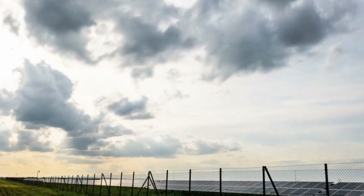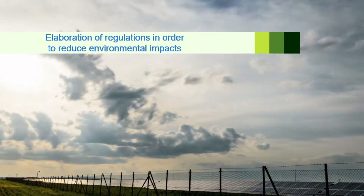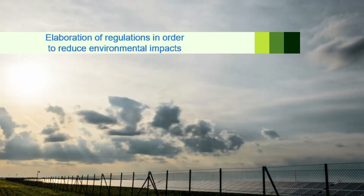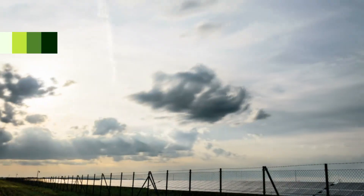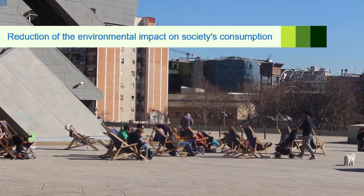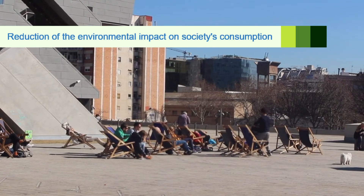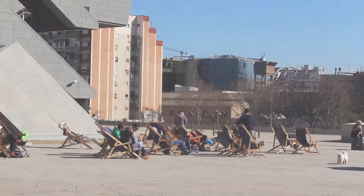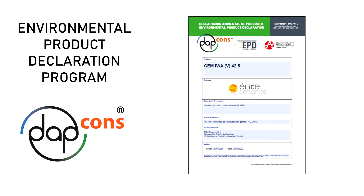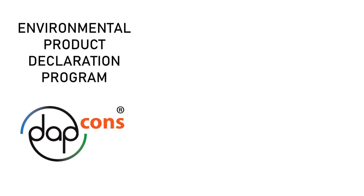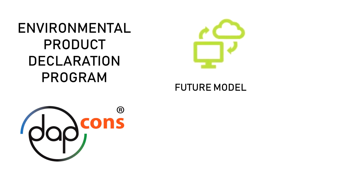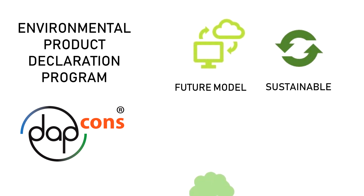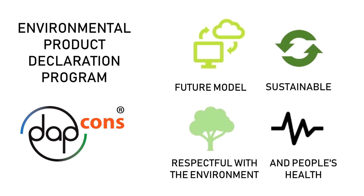On one hand, administrations are increasingly pursuing the reduction of impacts, with the development of regulations, and on the other hand, society is more involved in consuming goods and services with less impacts. Therefore, the Environmental Product Declaration program is a very useful tool to promote the transformation of the construction sector towards a future model that is sustainable and respectful with the environment and people's health. Thank you.